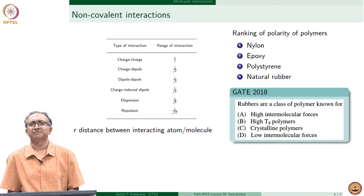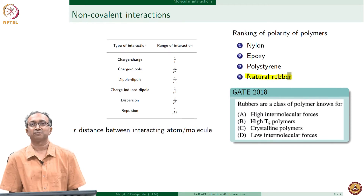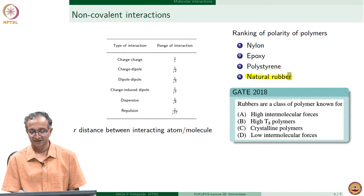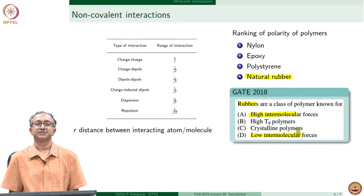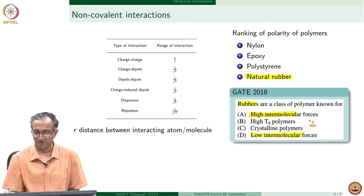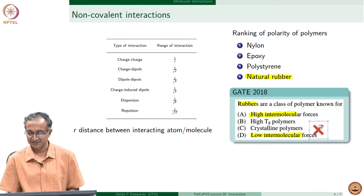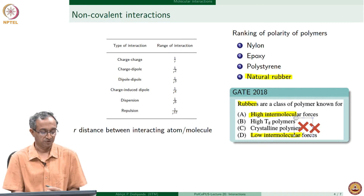Given the emphasis placed on interactions, and that natural rubber is the lowest in terms of polarity with none of the stronger interactions present, the question is: are rubbers a class of polymers known for high intermolecular forces or low intermolecular forces? Just to give a hint, the answer is not high Tg and it is not crystallinity in rubber. Are the intermolecular forces very high or low in rubber? Just ponder over this.